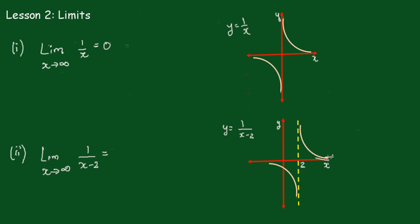So as x gets very very large, it will get closer and closer to 0, and again the limit is going to be 0. It doesn't matter what number is in there — whether it's plus 2, plus 3, or whatever — the limit will always be 0.